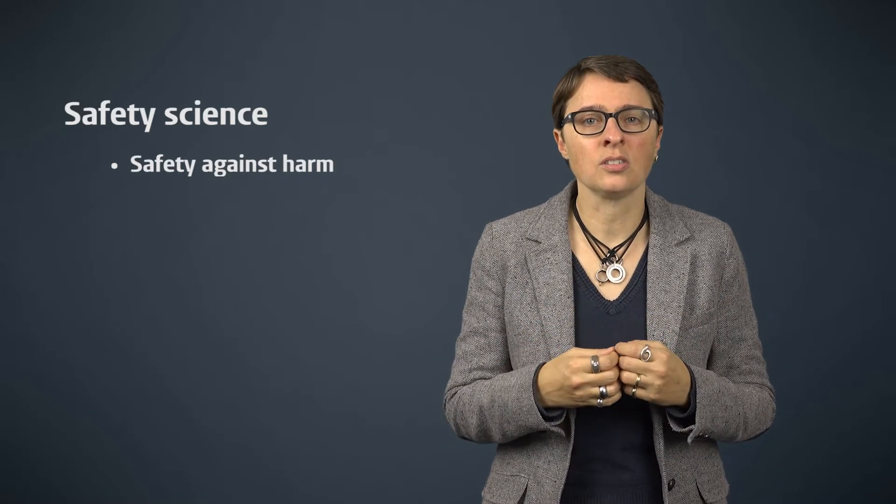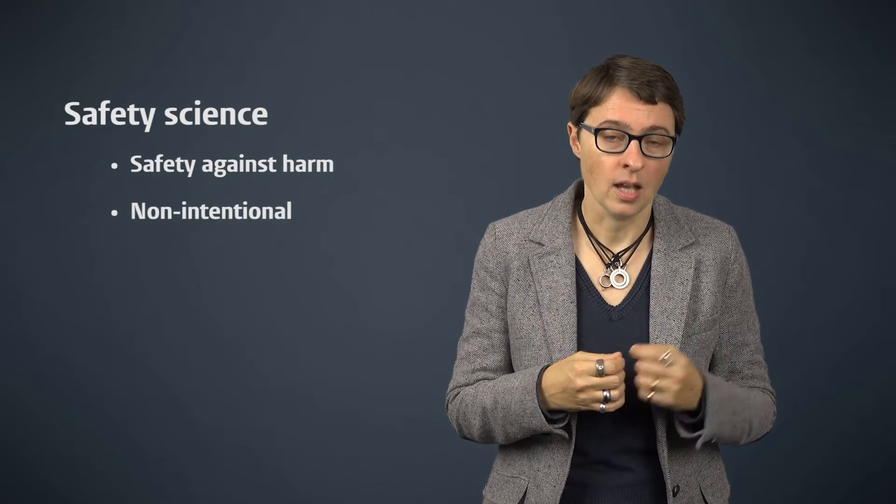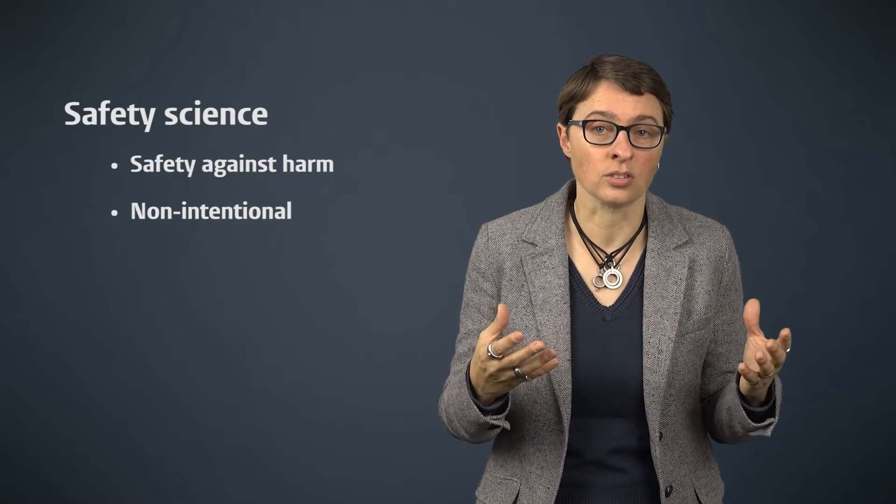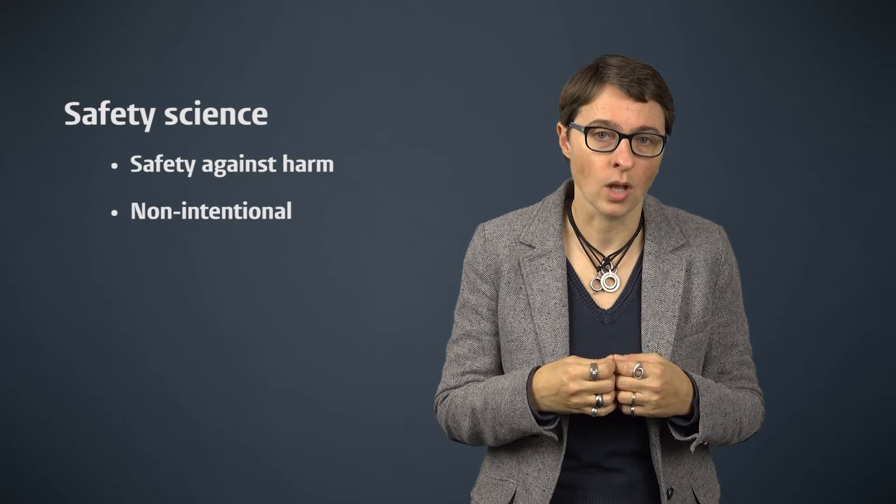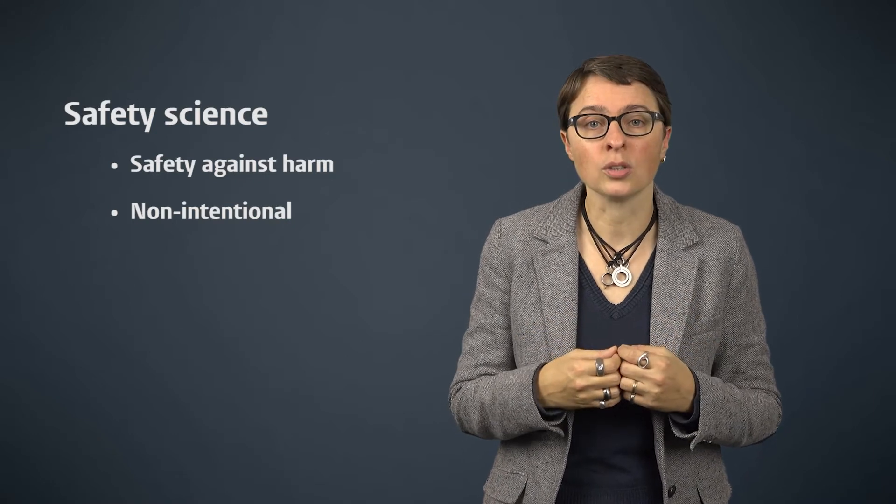Second, safety scientists mostly focus on harms that are non-intentional or accidental. They study the risks that result from natural hazards such as volcano eruptions and floods. Or they study risk of accidents in chemical plants. Or they seek to understand the risk of earthquakes for the design of nuclear power plants. In recent years, safety scientists have increasingly started focusing on intentional threats in relation to industrial safety. Or the safety of flood systems, for example in relation to terrorism. However, the vast majority of the work in safety science is targeted at non-intentional accidental hazards.